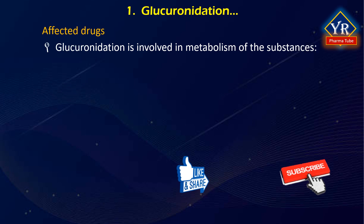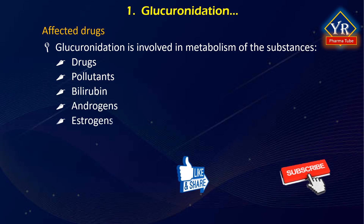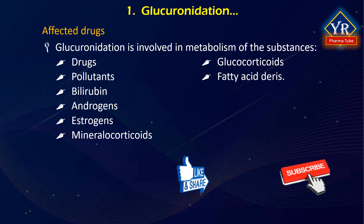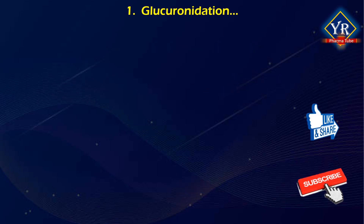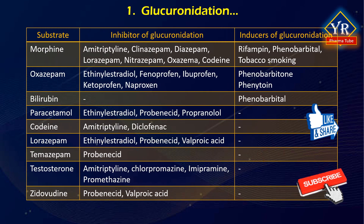Glucuronidation is involved in drug metabolism of substances such as drugs, pollutants, bilirubin, androgens, estrogens, mineralocorticoids, glucocorticoids, fatty acid derivatives, retinoids and bile acids. Many drugs which are substrates for glucuronidation as part of their metabolism are significantly affected by inhibitors or inducers of their specific glucuronosyltransferase types.